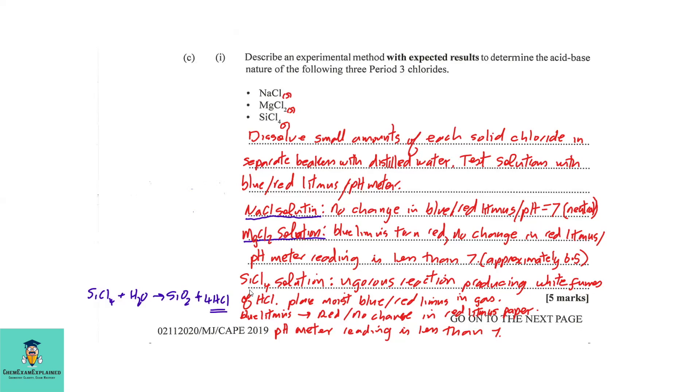For silicon tetrachloride, we are going to experience a vigorous reaction producing white fumes of HCl. When you place the moist blue and red litmus paper in the gas, the blue litmus should change to red because HCl gas is acidic, whereas you'll have no change for red litmus paper. If you test the solution, you should get a pH of less than 7. This is the equation to produce the HCl fumes.